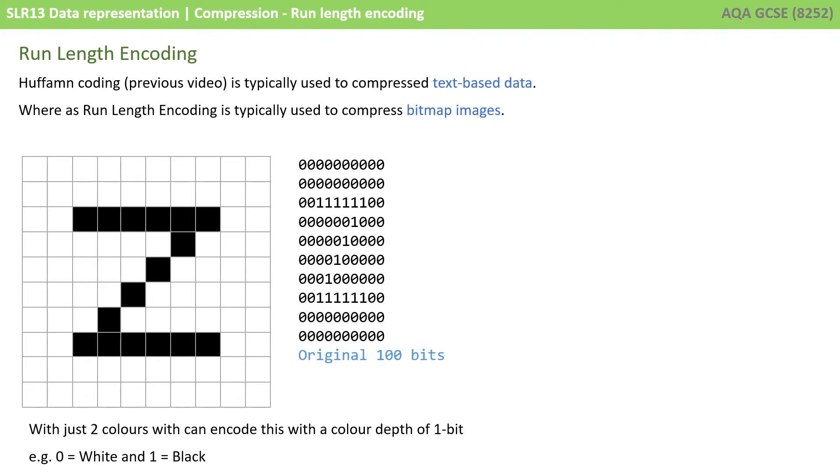If I simply write that out in the same order as the pixels from the bitmap, you can see here I have a sequence of 100 0s and 1s, so that's 100 bits of information I have to store.